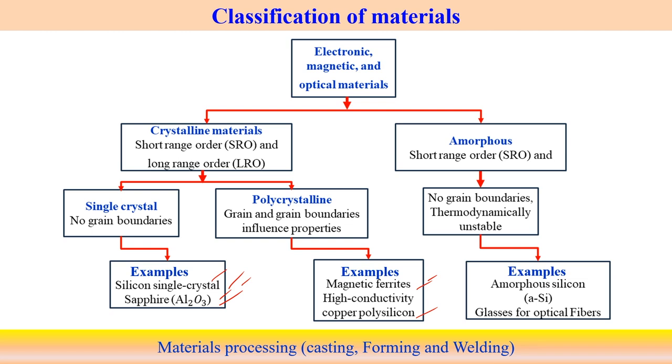Amorphous material has no clear grain boundaries and is thermodynamically unstable. Examples include amorphous silicon (a-Si) and glasses for optical fibers. These are mainly found in the application area of optical materials. So these three types — single crystal, polycrystalline, and amorphous — can be used in the different areas: electronics, magnetic, and optical.